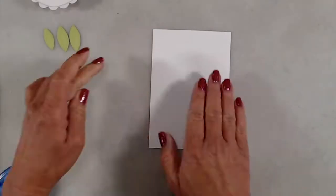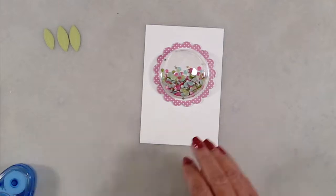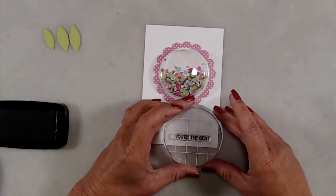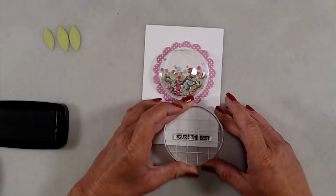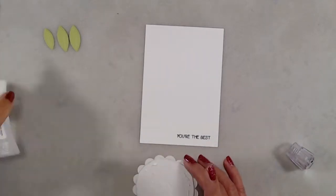I placed my bubble onto this piece of cardstock, which measures three and three quarters by five and a half, just so I would know where to stamp my sentiment. Once my sentiment was stamped, I used liquid glue on the back of my bobble bubble and adhered that in place.